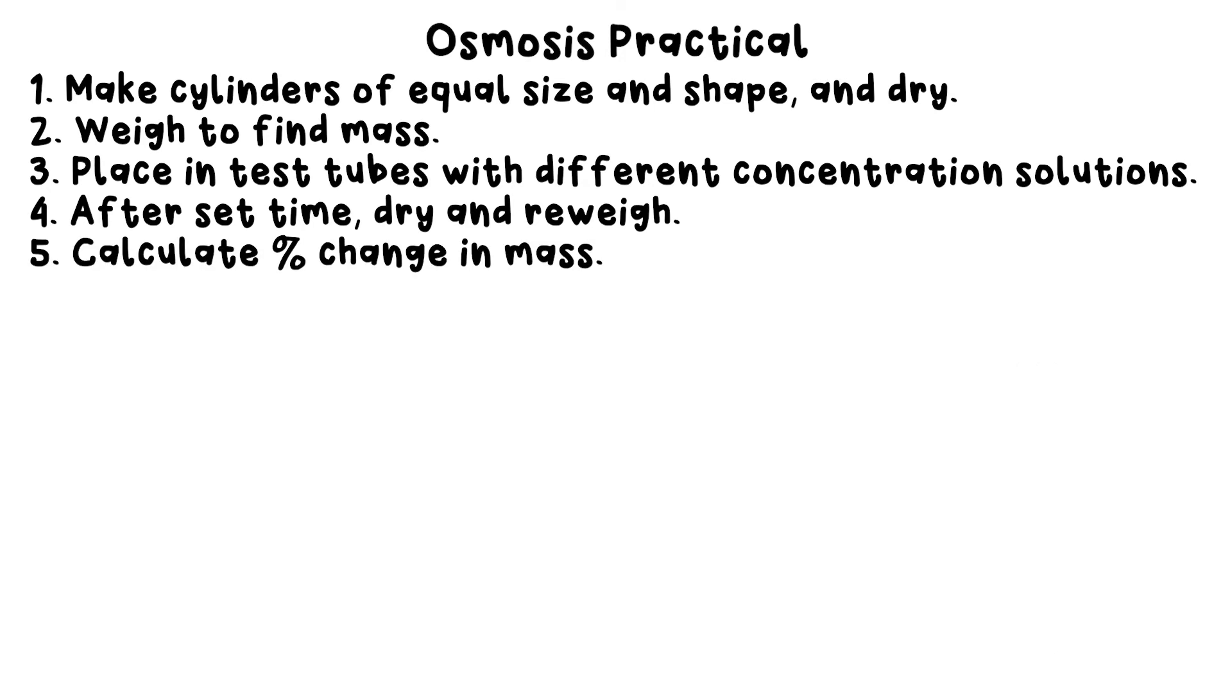Step 5: Calculate the change in mass by doing final mass take away initial mass, and then turn this into a percentage change in mass. Any percentage change is the change divided by the initial value times 100. We do this because all of our cylinders will have been slightly different sizes and masses, so working with percentages takes care of that to an extent.